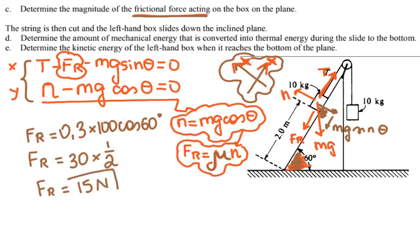On the AP exam you can choose g to be 9.8 or 10. I usually choose 10, and they don't mark you wrong for choosing either value, so it doesn't matter.